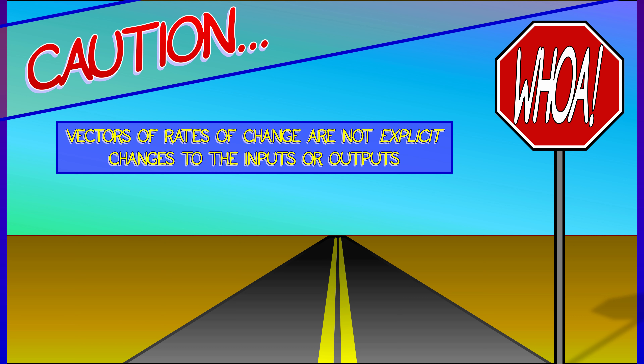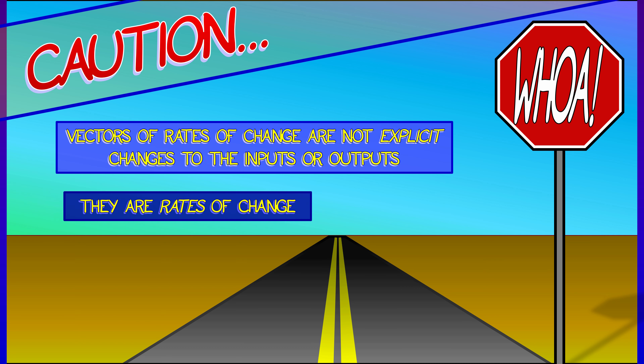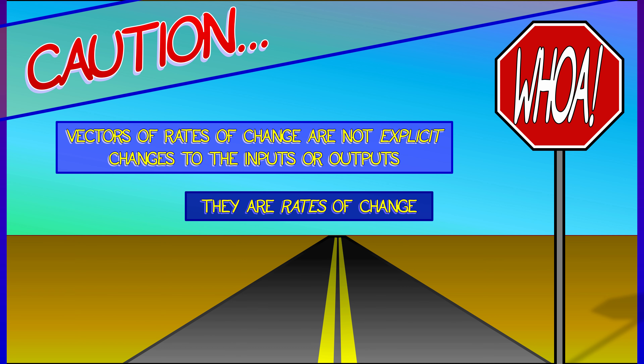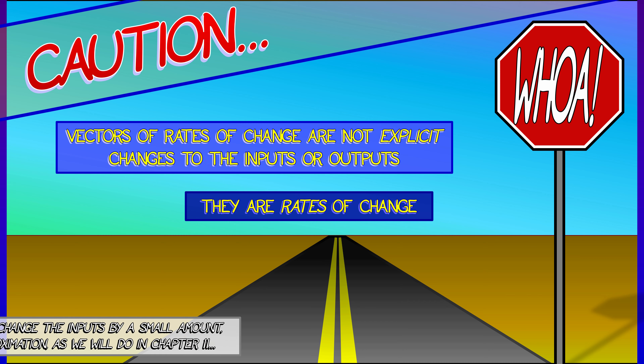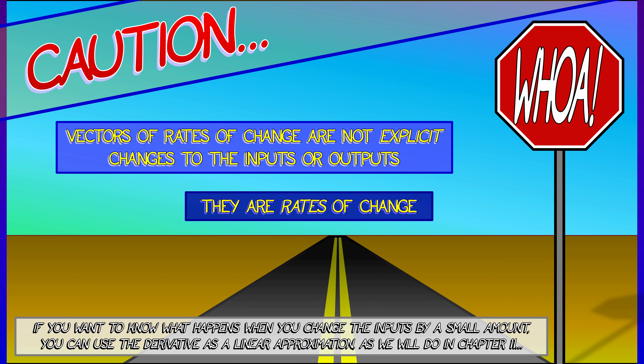We've been talking about rates of change and vectors and change — these are not explicit changes to the inputs or the outputs. They are rates of change. You can think about them infinitesimally, or you can think about them tangentially.